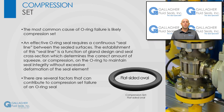Probably the most common cause of O-ring failure is compression set. An effective O-ring seal requires a continuous seal line between the sealed surfaces. The establishment of this seal line is a function of gland design and seal cross section, which determines the correct amount of squeeze, or compression, on the O-ring to maintain seal integrity without excessive deformation of the seal element. There are several factors that can contribute to compression set failure of an O-ring seal.